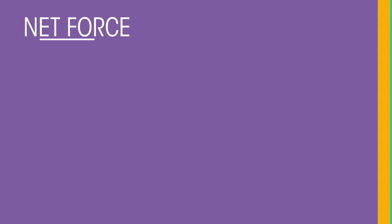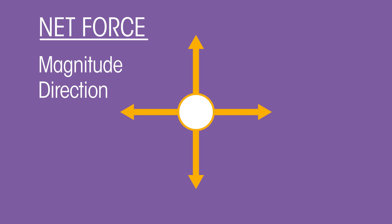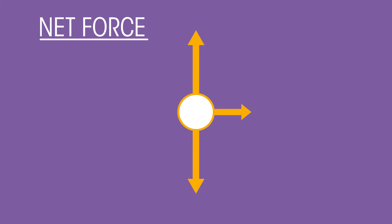Quantitatively, we can find the net force of any object by considering the size — the magnitude — and the direction of each force acting on it. It can help to draw on the forces yourself. Take a look at this example, which shows three forces acting on the object. The two vertical forces are equal and opposite, therefore canceling each other out. However, the horizontal force has no opposition and so it remains unbalanced, meaning the net force will act to the right with the magnitude of the horizontal force.